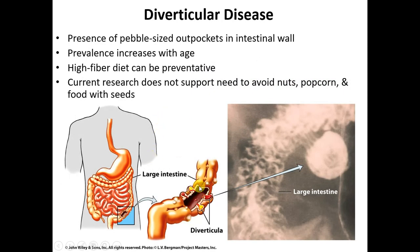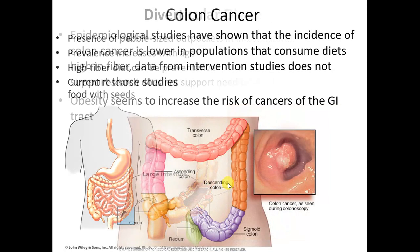Diverticular disease comes from a weak bowel that has not been exercised or strengthened due to a low-fiber diet over the years, resulting in out-pouches that can become inflamed and infected. Generally speaking, a high-fiber diet is a great idea to lessen your risk for diverticulosis.